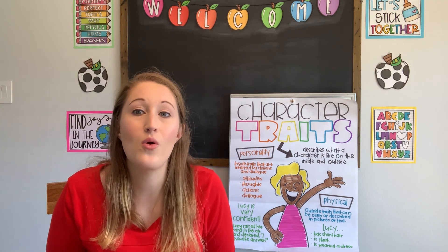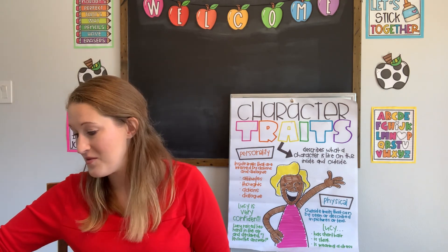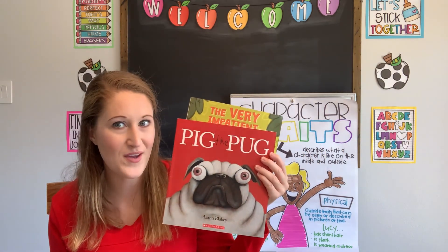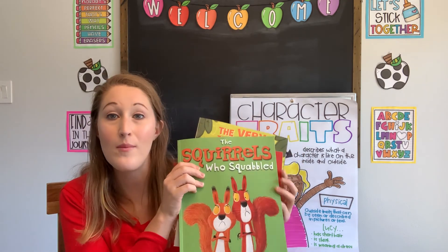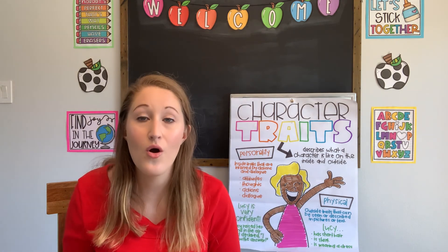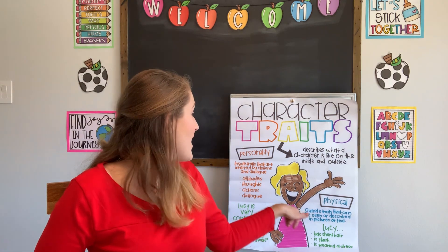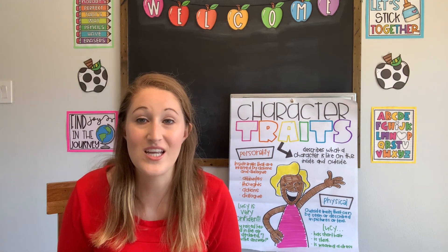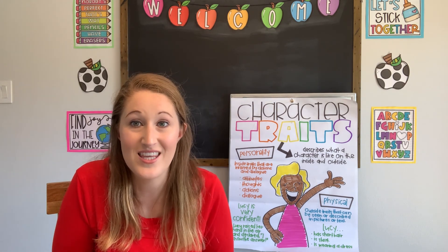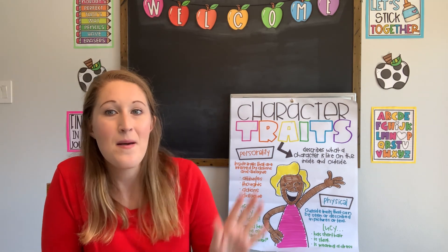Today we explored in-depth character traits. Later this week, we're going to be reading some of those books I showed you earlier — The Very Impatient Caterpillar, Pig the Pug, and The Squirrels Who Squabbled. We're going to read these books and learn more about the characters, identifying both their physical traits that we see on the outside and their personality traits — how they are on the inside. I hope you'll join us again later this week. Have a great rest of your day — bye, guys, thanks for coming!